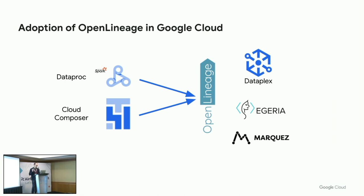OpenLineage is getting adopted across the industry more and more, and also within Google Cloud itself. We have Composer working toward it, and two weeks ago Dataproc — our Google Cloud Spark job runner — also announced support for OpenLineage and integration with Dataplex through that technology. That is growing and we are happy to be part of the momentum.